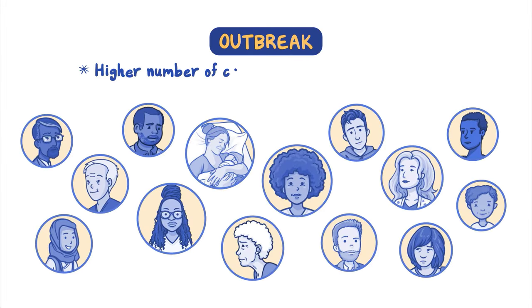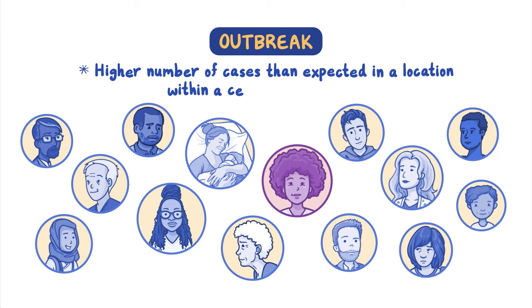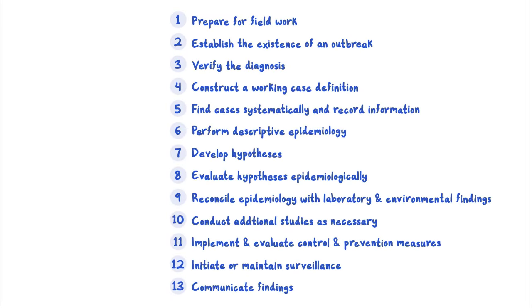Your friends might be part of a disease outbreak. An outbreak is a higher number of cases than expected in a location within a certain time period, and it often requires further investigation. During an outbreak, a team of many different public health experts work at identifying the source and how the disease is spreading, finding ways of protecting the community, and communicating their findings. Like a team of scientists using the scientific method, a public health team uses a series of steps to investigate an outbreak as quickly and efficiently as possible.